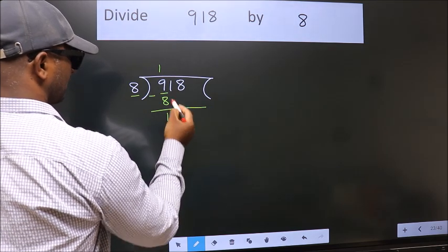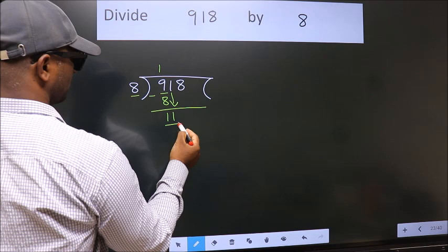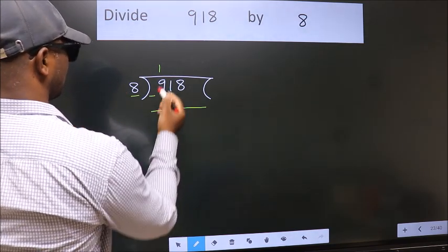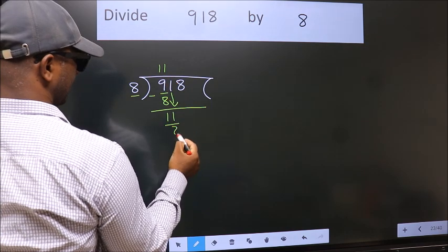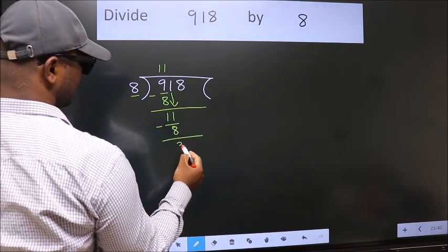After this, bring down the beside number. 1 down. So, 11. A number close to 11 in the 8 times table is 8 once 8. Now we subtract. We get 3.